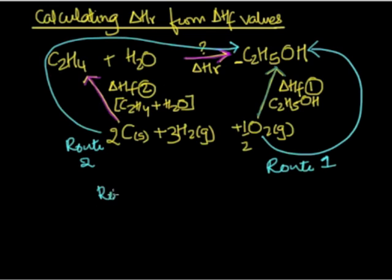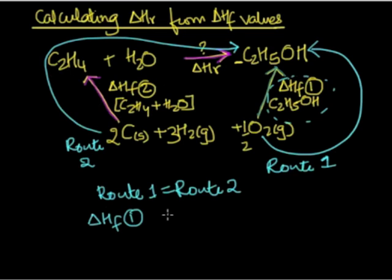So Hess's law states that route 1 is equal to route 2. So route 1 is this delta HF over here. So I am going to write delta HF 1 is equal to, and then for route 2 I have this delta HF and this delta HF.